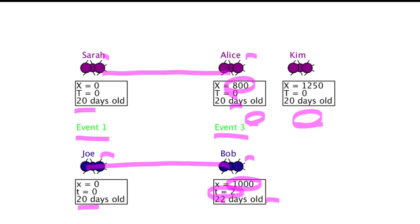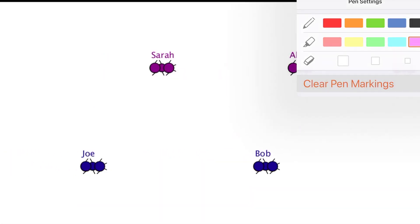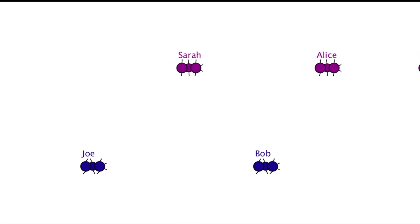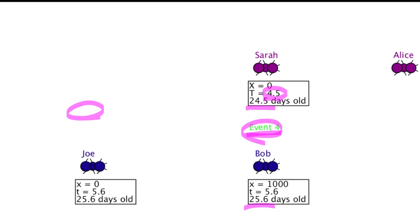And now we have to see how the boys say the girls' clocks are running slow. We see event 4: 24-and-a-half-day-old Sarah meets 25.6-day-old Bob. And so the boys say, look — between events 1 and 4, Sarah only aged 4.5 days, while we aged 5.6 days. Clearly, the girls' clocks are running more slowly than ours.